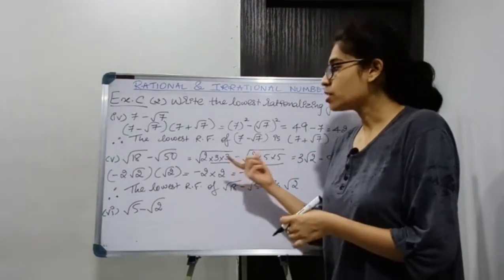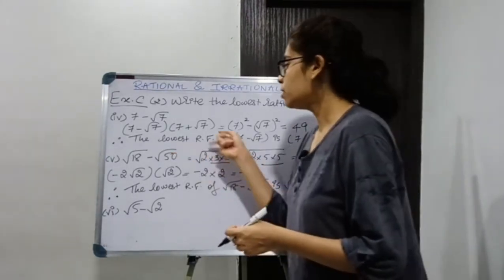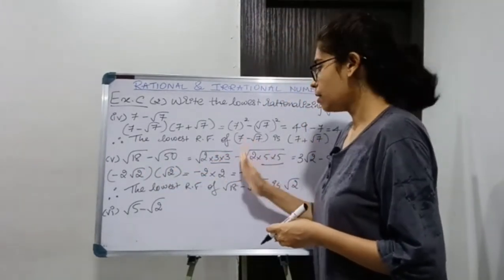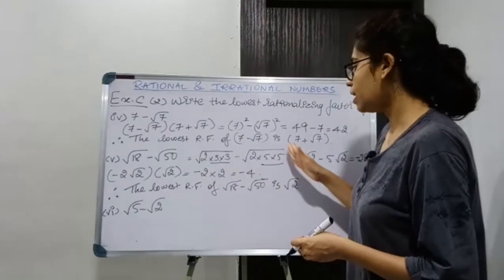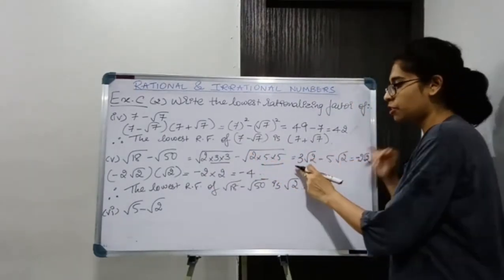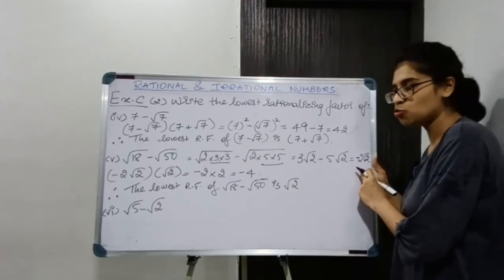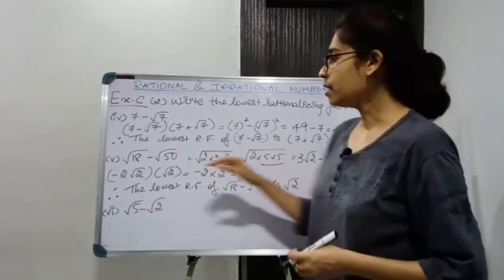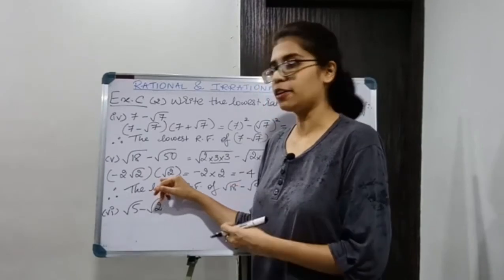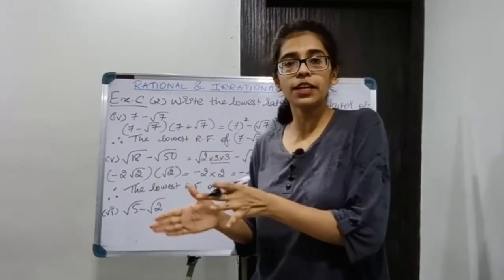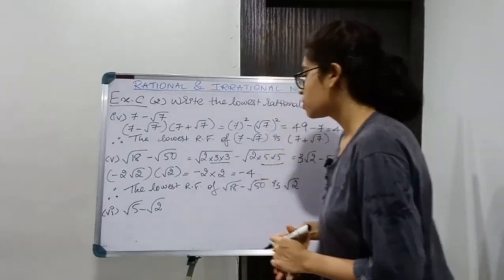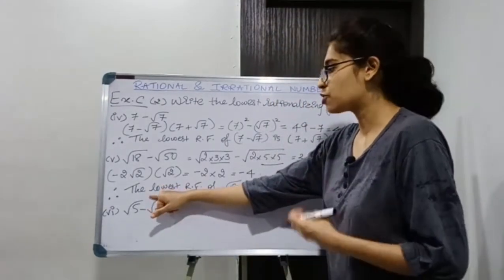It is very simple — you just need to bring the numbers outside the root if possible. Here I brought the numbers outside by taking roots, then solved: 3√2 - 5√2 = -2√2, and then found the rationalizing factor. First simplify the number, then find its rationalizing factor, and you will get the lowest rationalizing factor.